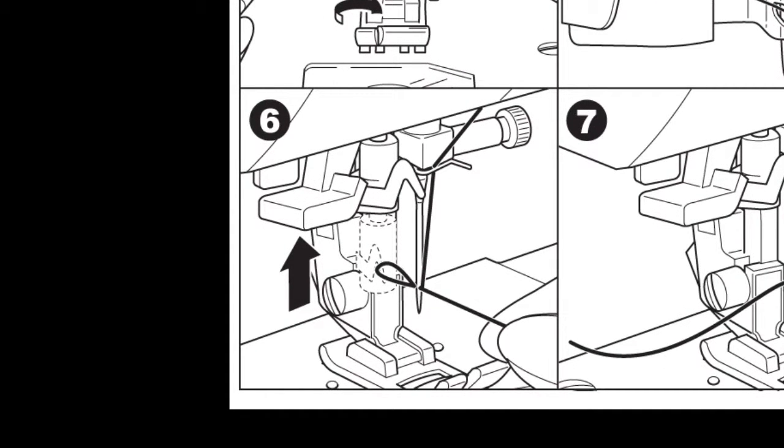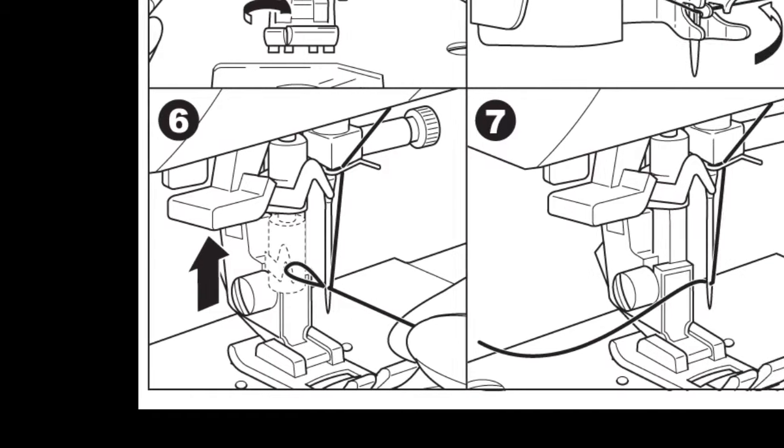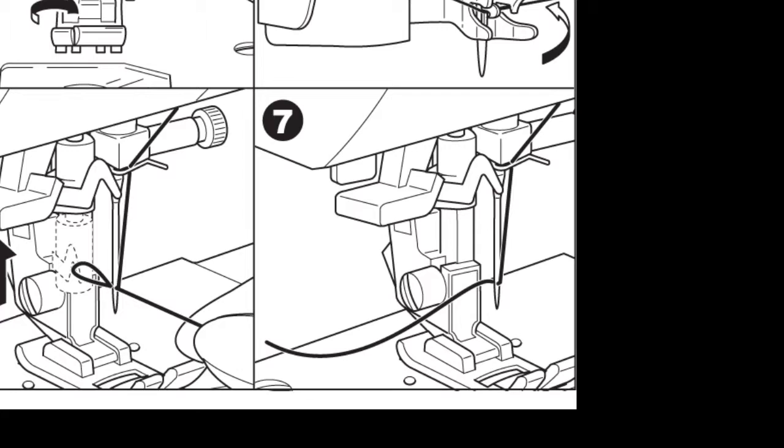Draw the thread into the guide. Make sure that you hold the thread loosely and release the lever. The hook will turn and pass through the needle eye while making a loop. Pull out the loop about 4 inches from the eye of the needle.